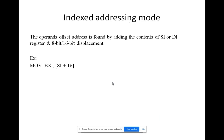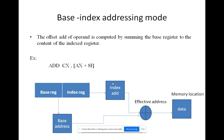Next, index addressing mode with SI: the operand is determined by adding the content of the SI or BX register with an 8-bit or 16-bit displacement. For example, MOV BX, [SI+16] — here, 16 is the displacement added to the source index register to give the memory location, and the data at that location is moved to the BX register.